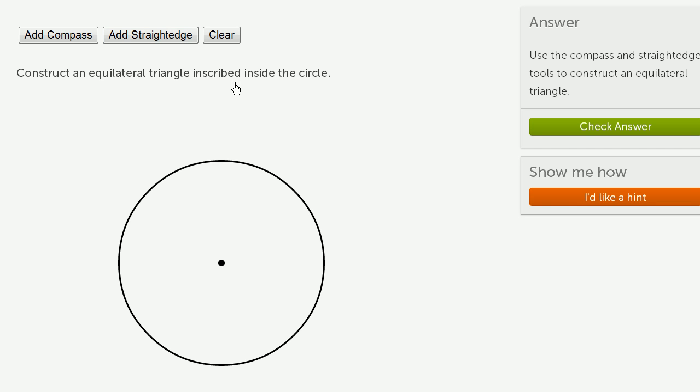Construct an equilateral triangle inscribed inside the circle. So let me construct a circle that has the exact same dimensions as our original circle. Looks pretty good. And now let me move this center so it sits on our original circle.